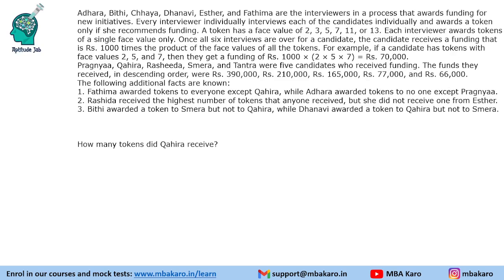Each interviewer individually interviews each candidate and awards a token only if she recommends funding. A token has a face value of 2, 3, 5, 7, 11 or 13 — all prime numbers. Each interviewer awards tokens for a single face value only. For example, if A awards 2, she will award 2 only. If E awards 5, she will award 5 only.